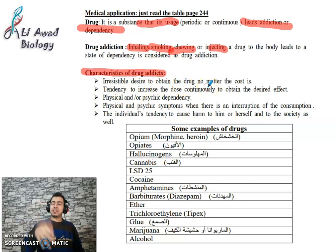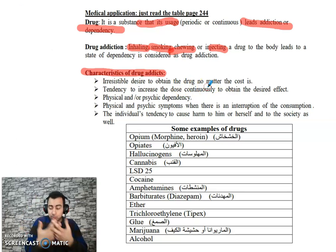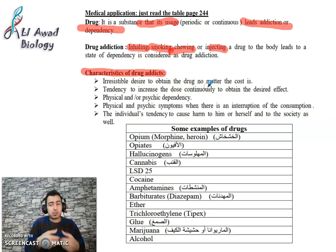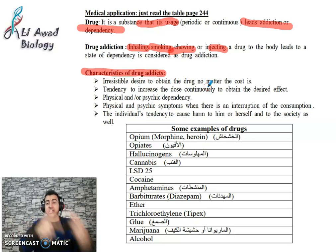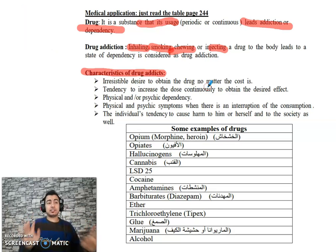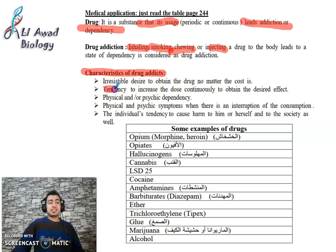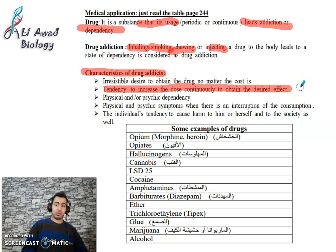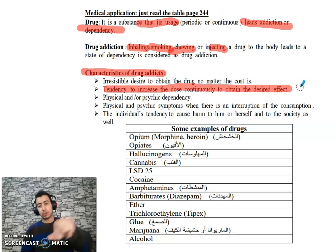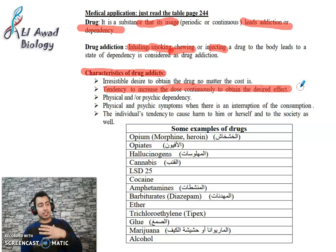The first characteristic of a drug addict is an irresistible desire — they cannot resist their urge to obtain the drug no matter what, even if it means stealing or harming others, whatever it takes to get it. The second is the tendency to increase the dose continuously in order to obtain the desired effect — this is what we call tolerance (التعود).